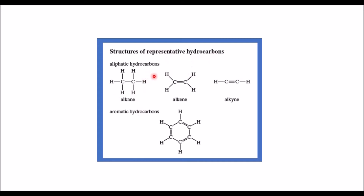Hydrocarbons are organic compounds composed of carbon and hydrogen only. They may be aliphatic hydrocarbons or aromatic hydrocarbons. Aliphatic hydrocarbons are divided into three main groups according to the types of bonds they contain. Alkanes are also called saturated hydrocarbons since they contain only single-bonded carbon and hydrogen atoms. Alkenes are unsaturated hydrocarbons with at least one double bond, and their compound names end in -ene. Alkynes have at least one triple bond, and their compound names end in -yne.